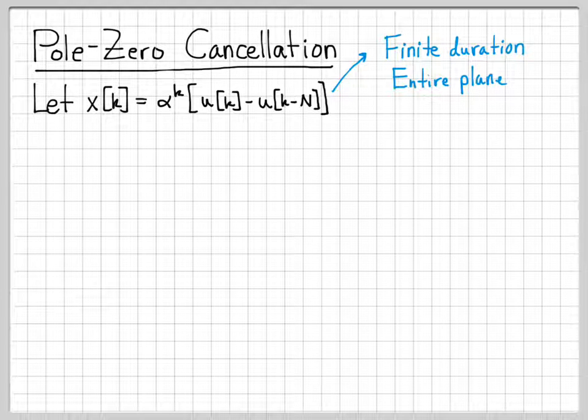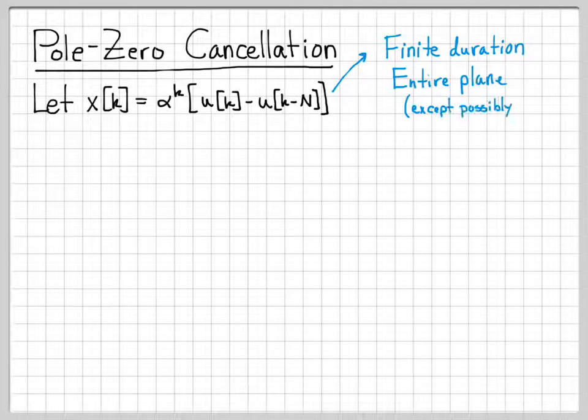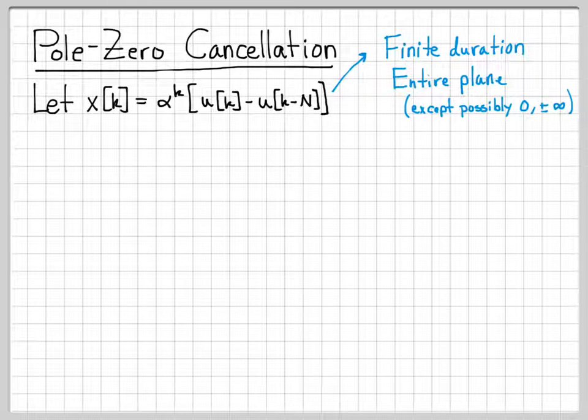We've studied finite duration signals, and we know that when taking their z-transform, their region of convergence is actually the entire z-plane. The only points that we have to watch out for are possibly z equals 0 or z equals plus or minus infinity. So we know that this signal here should have a region of convergence that's everywhere except for possibly a point or two.